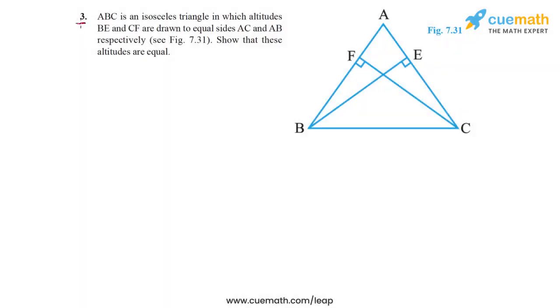The problem statement in question 3 says triangle ABC is an isosceles triangle in which the altitudes BE and CF drawn from B and C respectively to the equal sides AC and AB intersect the sides at E and F. So this is what the situation is; we have to show that these two altitudes are equal.